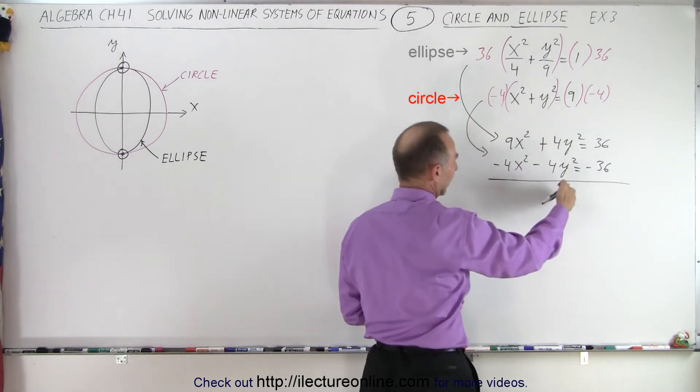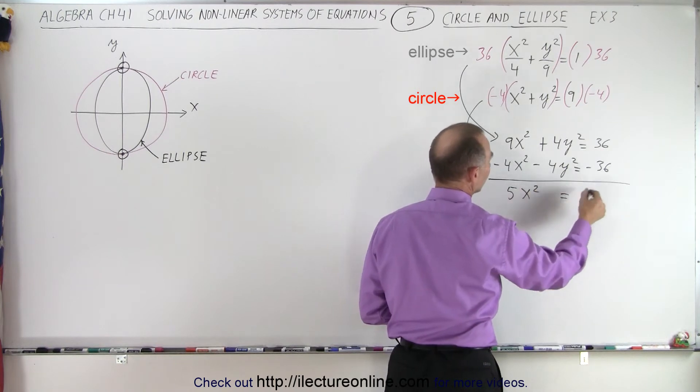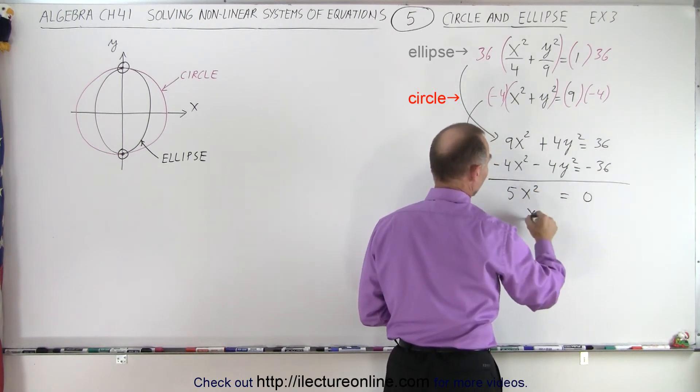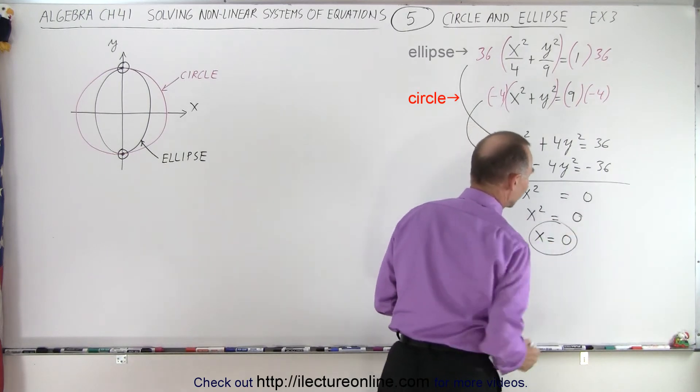Notice the y's will cancel out, and here we end up with 5x squared is equal to 0, or x squared is equal to 0, or x equals 0. There's only one solution for x.